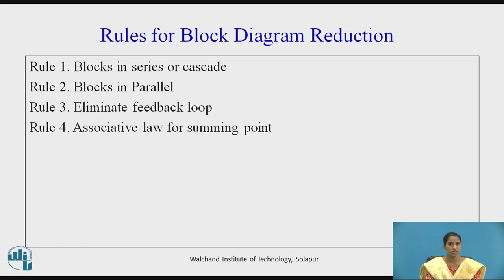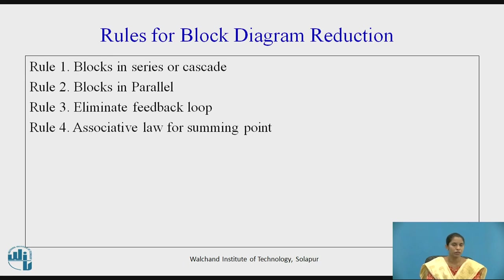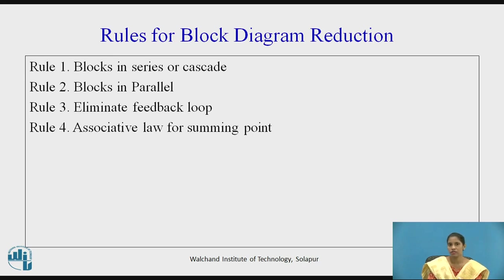When two blocks are connected in parallel, they can be algebraically added or subtracted depending on the sign of the feedback. For eliminating the feedback loop, if there is a negative feedback, we take positive. The third rule states: eliminate the feedback loop — if the system has one feedback, one forward path, one takeoff, and one summing point, then these can be reduced to a single block which gives G(s) upon 1 plus or minus G(s)H(s).